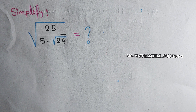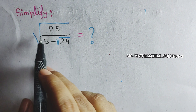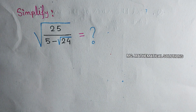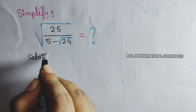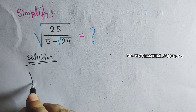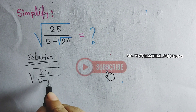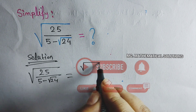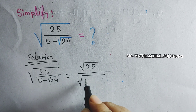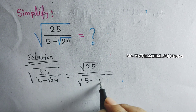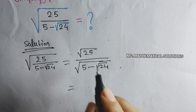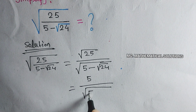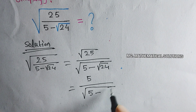Hello students, welcome. Let's solve a nice square root problem: root under 25 by (5 minus root 24). We can write this as root 25 by root under (5 minus root 24), which equals 5 by root under (5 minus root 24).